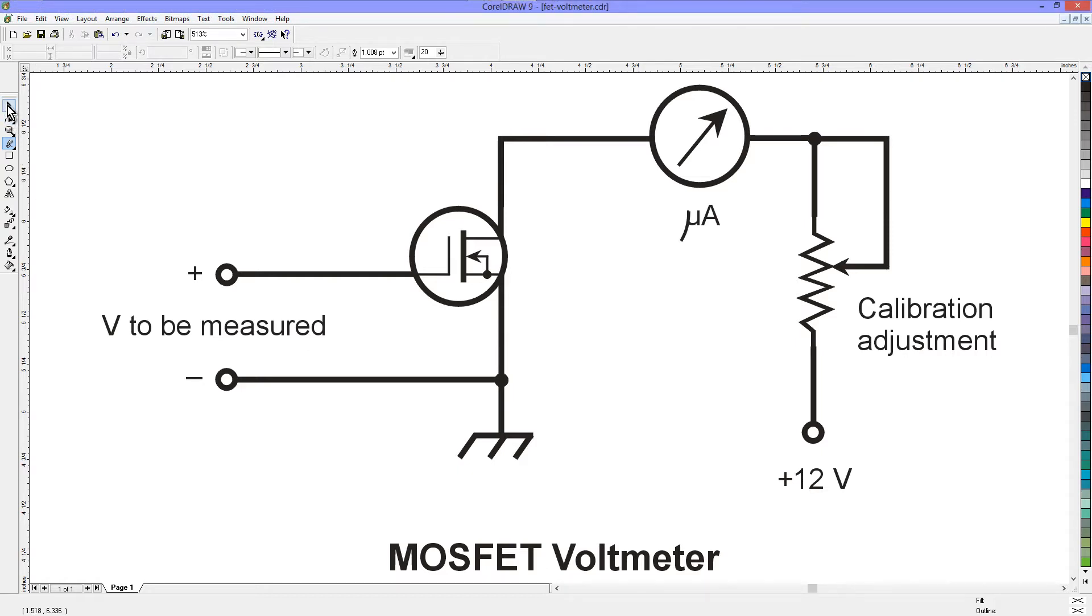And here is the basic beast. The voltage to be measured is input between the source and the gate of a metal oxide semiconductor field effect transistor. That's what a MOSFET is.